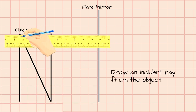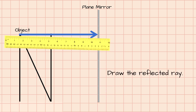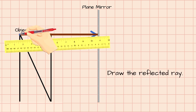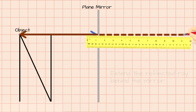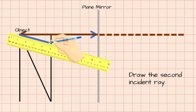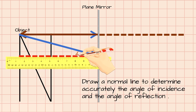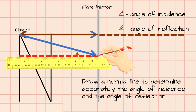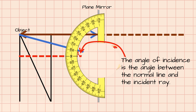Draw an incident ray from the object. Draw the reflected ray. Extend the reflected ray behind the mirror. Draw the second incident ray. Draw a normal line to accurately determine the angle of incidence and the angle of reflection. Using a protractor, measure the angle of incidence.